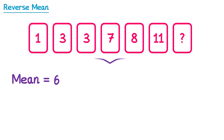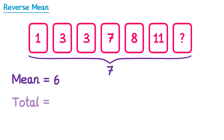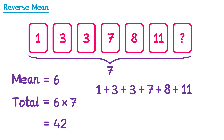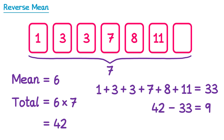So the first thing to do is count up how many numbers there are, and in this one there are 7. This means we can work out the total of all of the numbers by multiplying the mean, which is 6, by how many numbers there are, which is 7. 6 times 7 gives you 42, so all 7 of these cards must add up to make 42. We know 6 of them, so let's add up those cards: 1, 3, 3, 7, 8, and 11, and this gives you 33. So to find the value of the missing number, we just subtract 33 from the total of 42. So 42 subtract 33 gives you 9 — the number on this missing card must be 9.